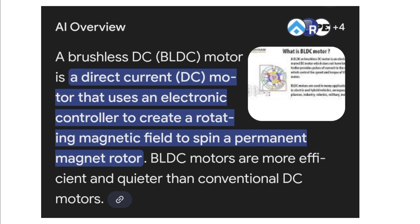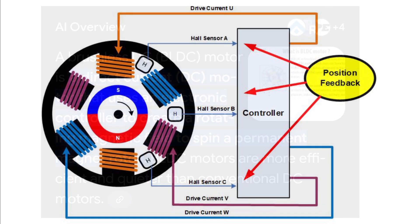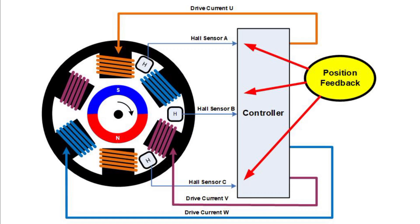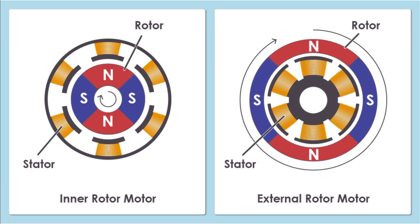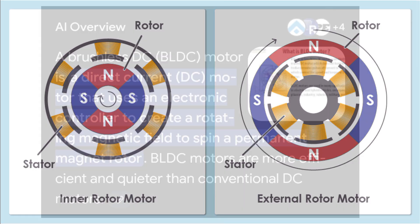BLDC motors are a type of DC motor that uses electronic controllers to switch the current flow to the motor windings, eliminating the need for brushes and the commutator. This is the main advantage of using the BLDC motor — the brushes and commutator are eliminated.